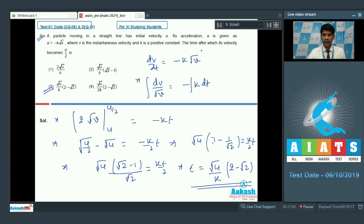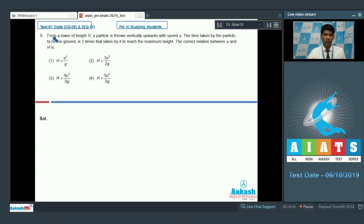Now let us proceed to question number 9. From a tower of height h, a particle is thrown vertically upward with speed u. The time taken by the particle to hit the ground is 3 times the time taken by it to reach the maximum height. The correct relation between u and h is? Let me give you the small explanation here. Let us say this was the height of the tower. Once the particle was thrown in the upper direction, the particle will move along the direction to reach the maximum height from here and then again it falls back to the ground.